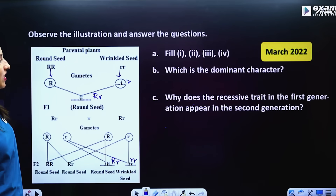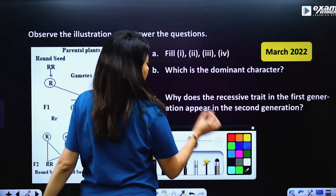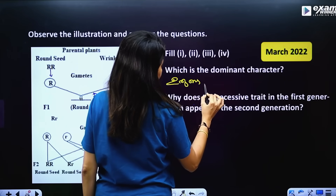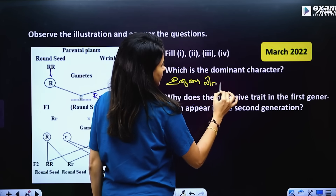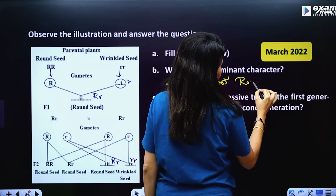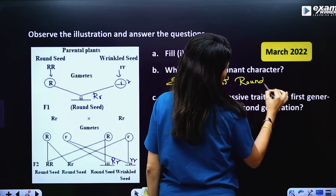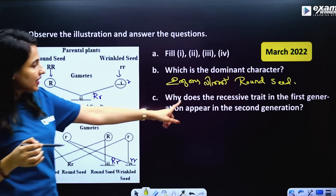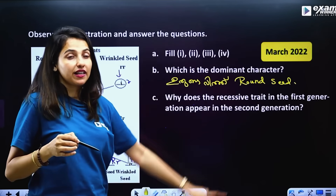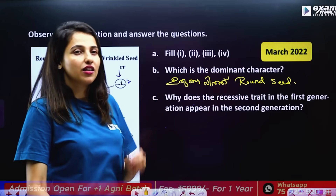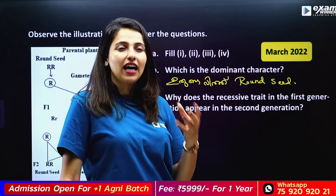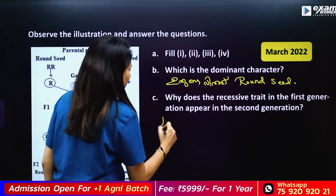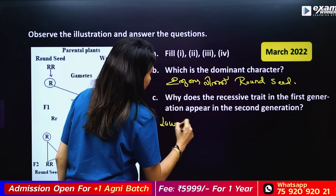Which is the dominant character? The one with the round seed — that is the dominant character. Why does the recessive trait appear in the second generation? Because of the Law of Segregation.